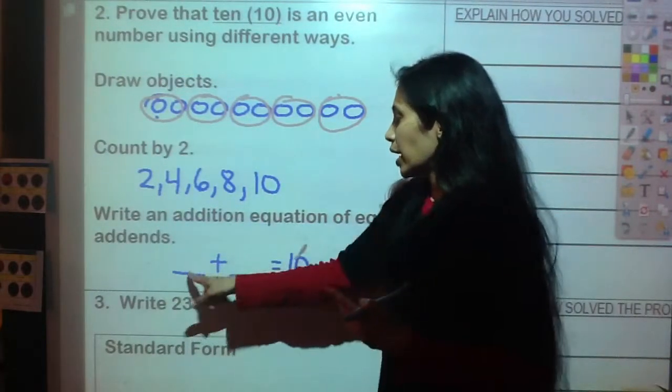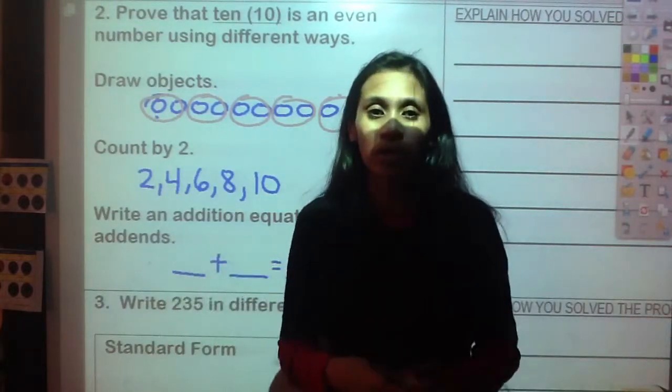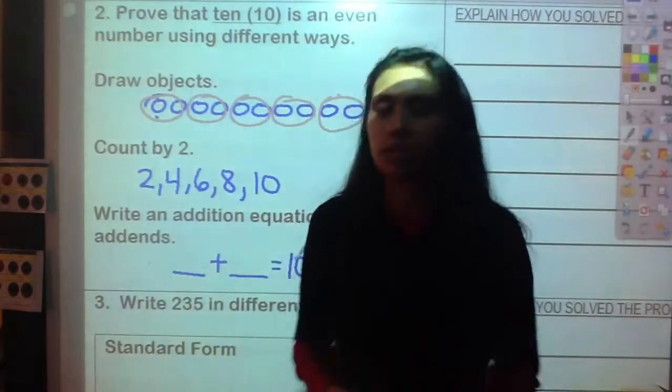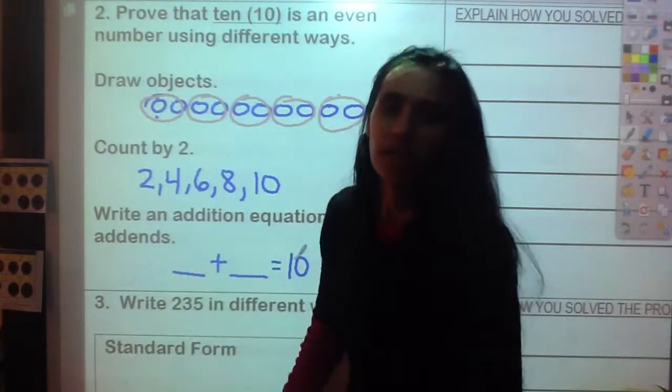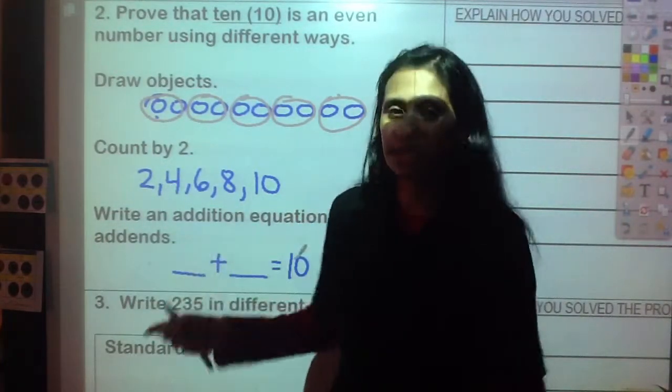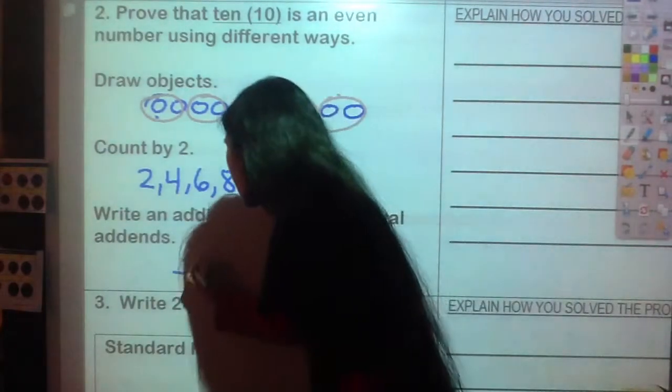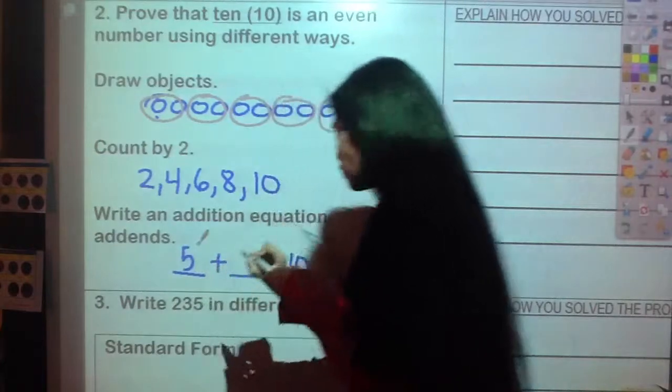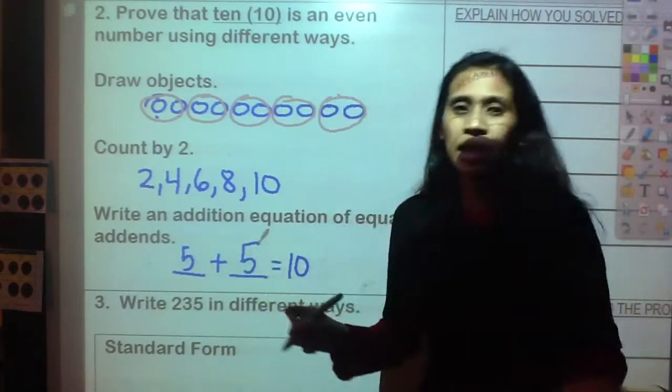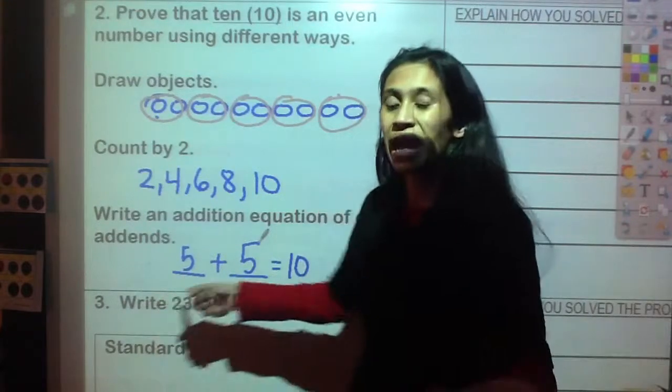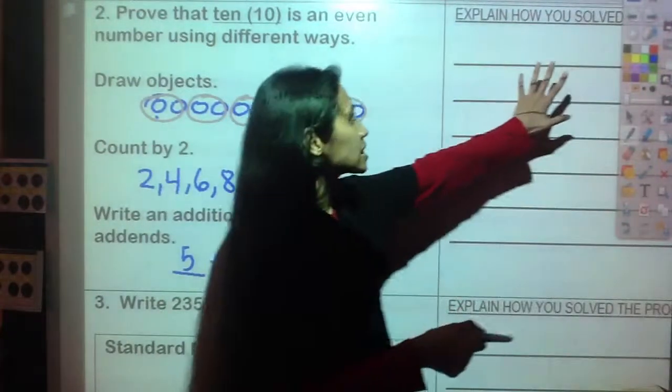What number can I put in the blank to equal ten, and these have to be equal? That means it has to be the same number. For example, three plus three, one hundred plus one hundred, forty-five plus forty-five. What numbers can we add to make ten? It's so easy: five plus five. Now I know six plus four is ten, seven plus three is ten, but remember they have to be equal.